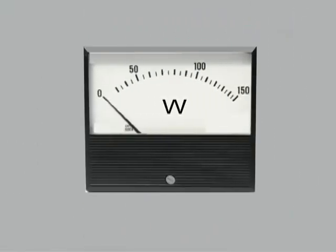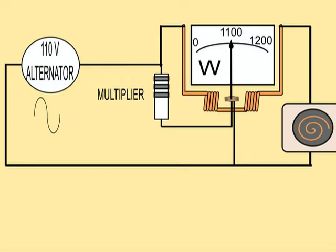Next, we will talk about the wattmeter, a quite different instrument. Instead of having a conventional galvanometer using a permanent magnet, the magnet is replaced with another coil divided into two windings.